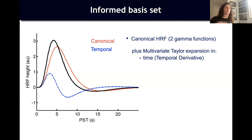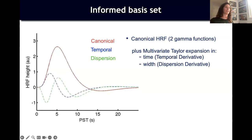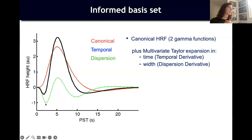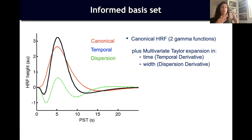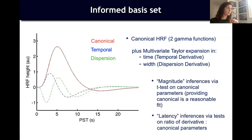BOLD signals can also differ in shape — some are spikier, some narrower, some flatter. The dispersion derivative addresses this: a negative load means the BOLD signal is narrower and spikier; a positive load means it's flatter and more spread out. By summing the canonical HRF with both the temporal and dispersion derivatives, you get a BOLD signal that better matches what's actually observed.